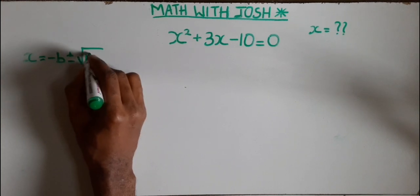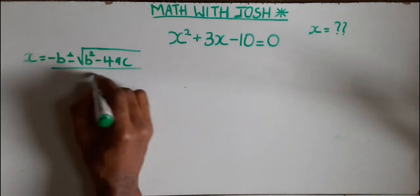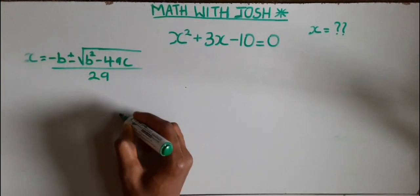Which says x equals minus b plus and minus square root of b squared minus 4ac all over 2a.